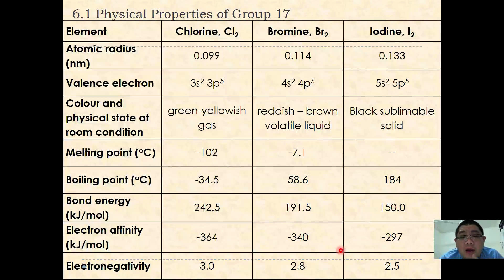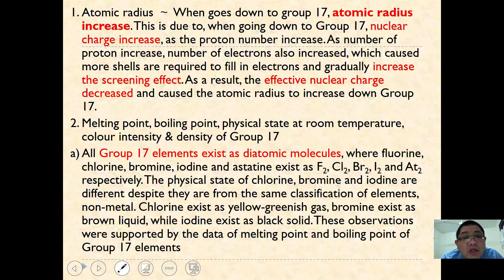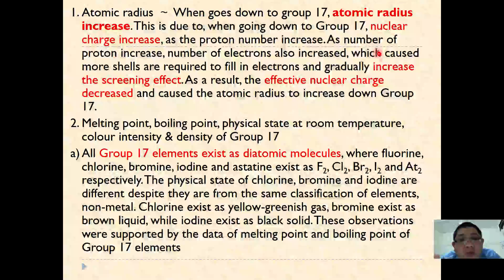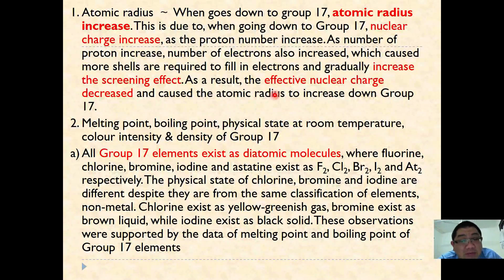Starting with atomic radius: going down group 17, atomic radius increases. This is because nuclear charge increases as proton number increases, however the screening effect also increases as more shells are added. This results in the effective nuclear charge decreasing, causing the atomic radius to increase down the group. Next we look at melting point, boiling point, physical state at room temperature, color intensity, and density of group 17.